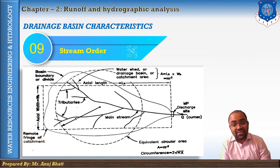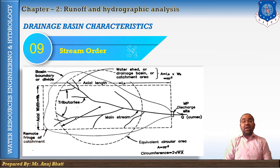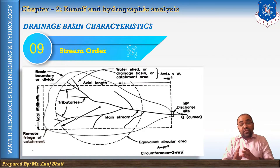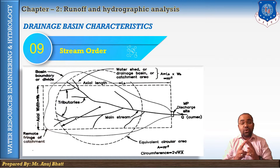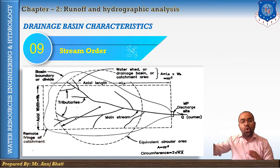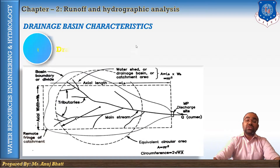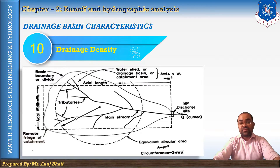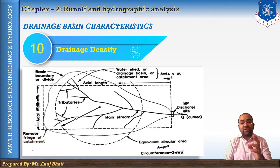The ninth is stream order. All non-branching tributaries, whether they enter the main stream or branches, are termed first order streams. Streams which receive only non-branching tributaries are second order streams. Third order streams are formed by the junctions of two second order streams, and so on.